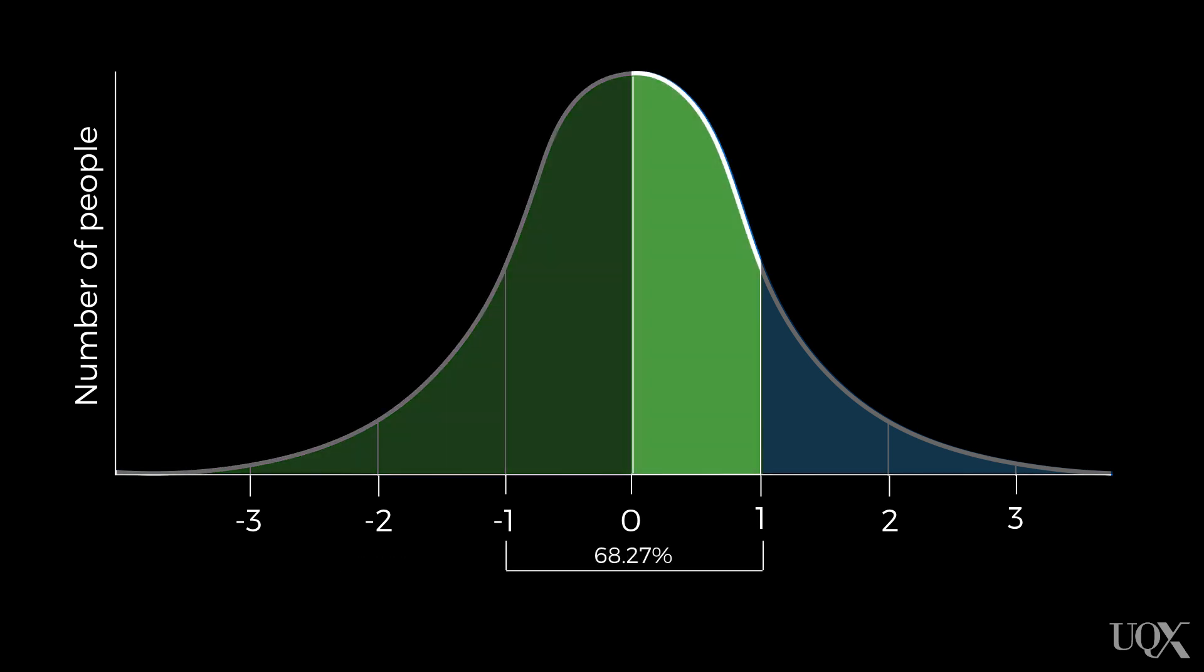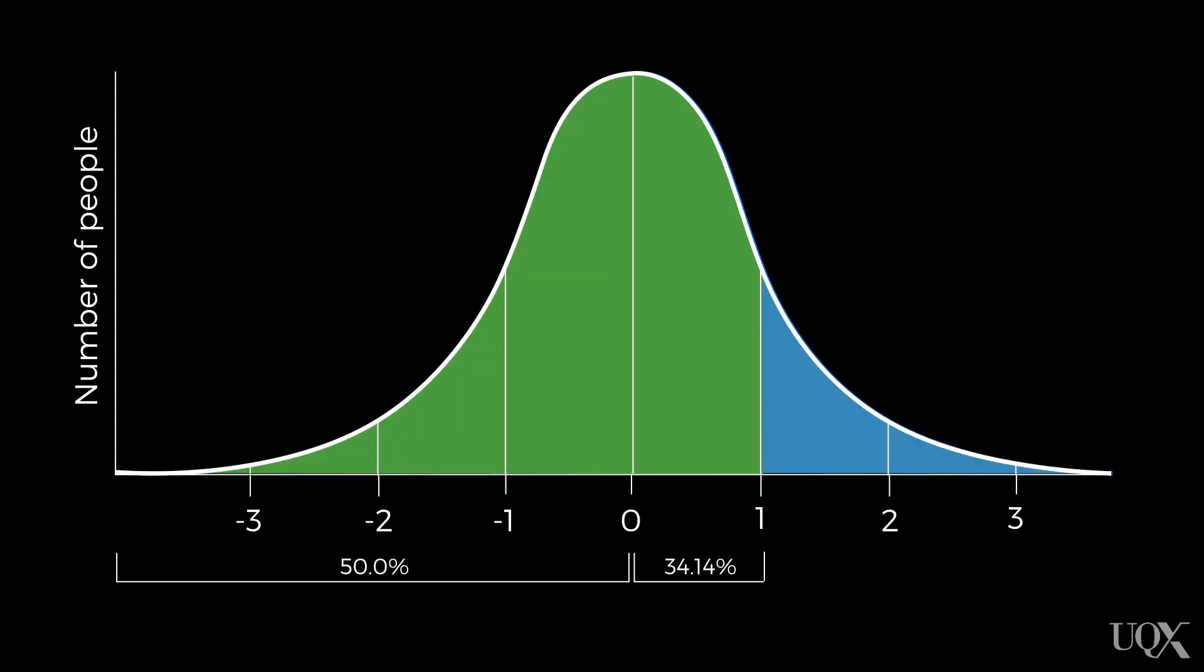We also know that the additional portion is half of the region between plus and minus one standard deviation, so half of 68 percent is 34 percent. We can just add these together to work out that our person who is 180 centimeters tall is taller than 84 percent of people. That's pretty tall. We could say that this person is taller than the majority of people.